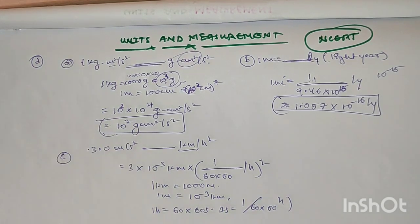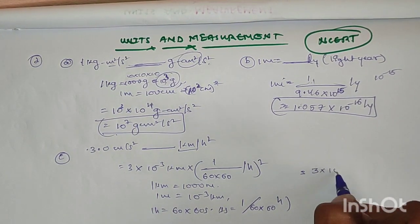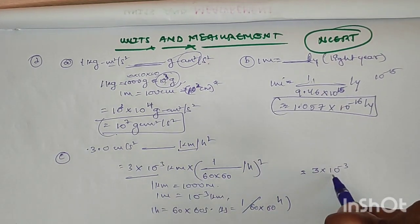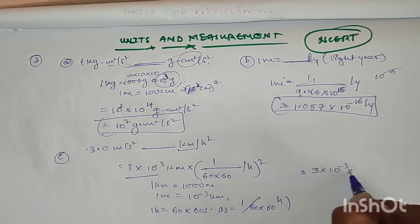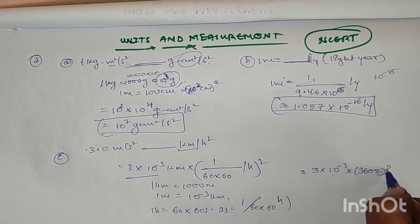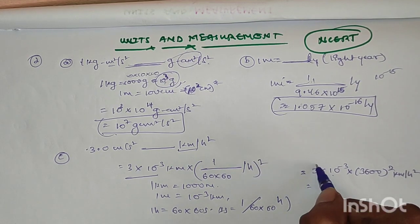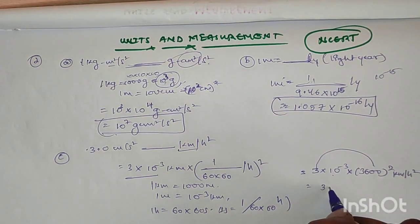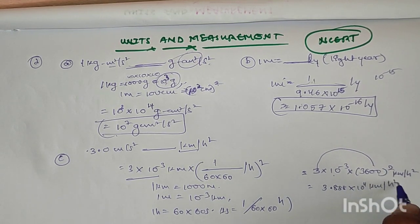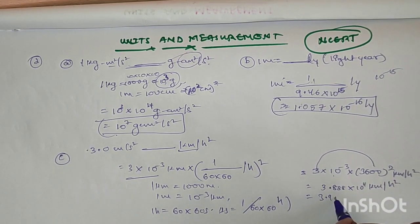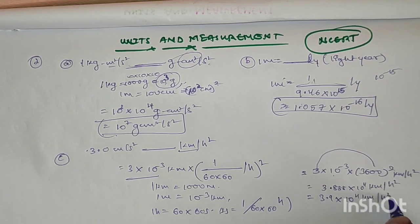So we get 3 into 10 to the power of minus 3 kilometers, and the seconds squared becomes 3600 squared in the denominator. We get 3 into 3600 squared, which equals 3 into 3600 squared, giving approximately 3.9 into 10 to the power of 4 kilometers per hour squared.